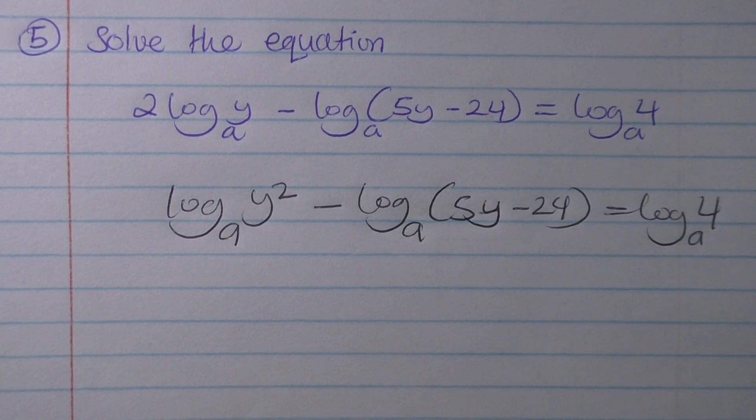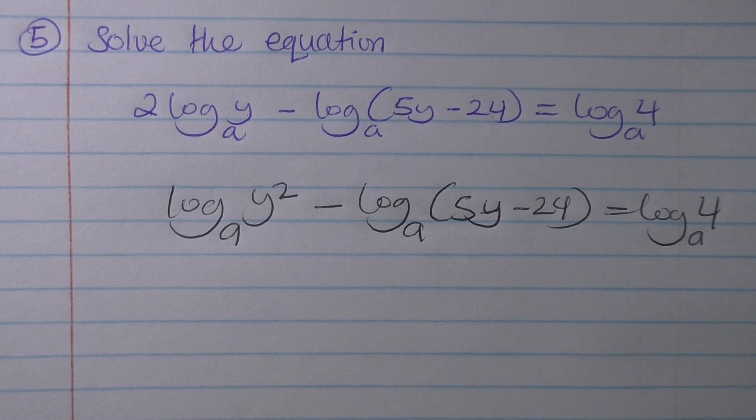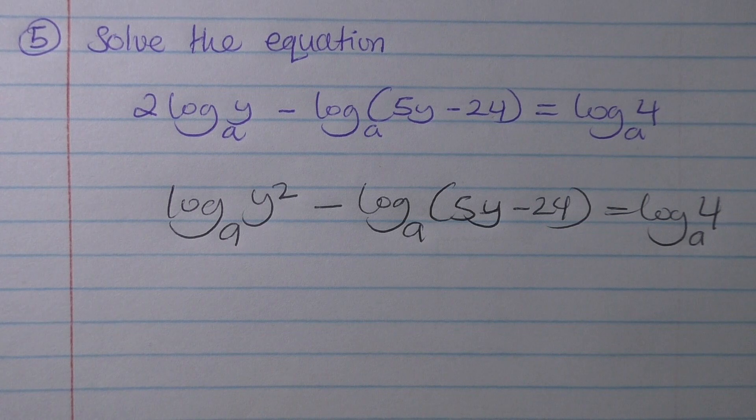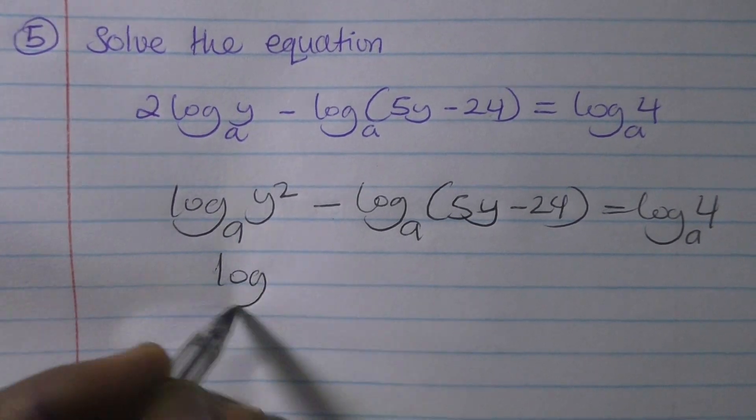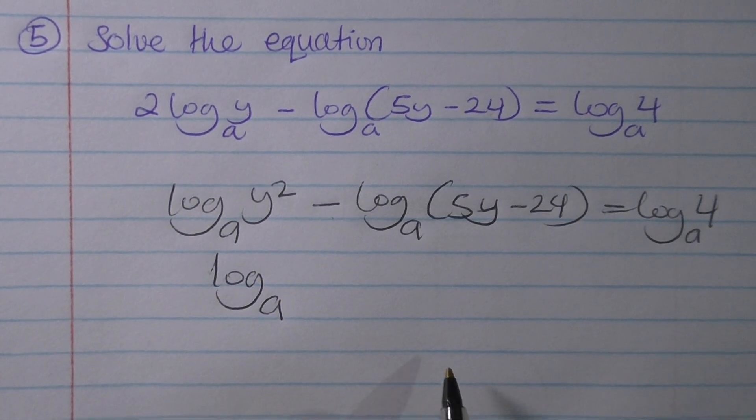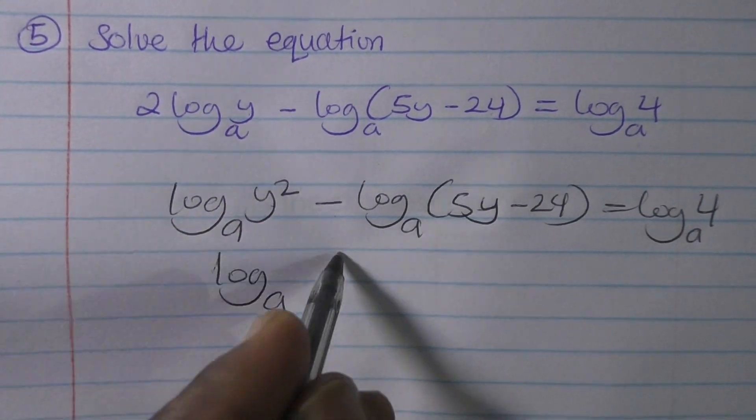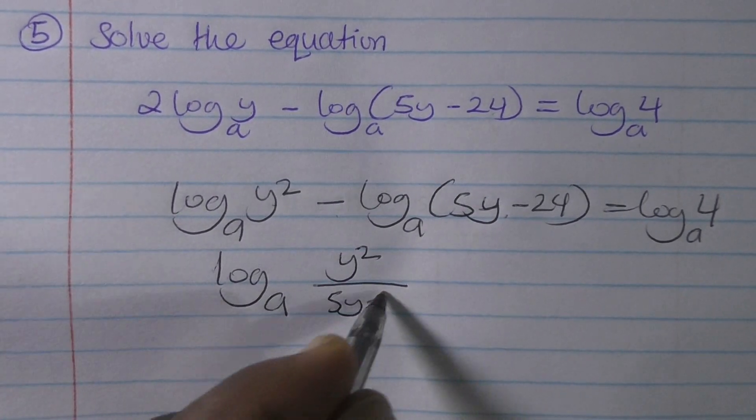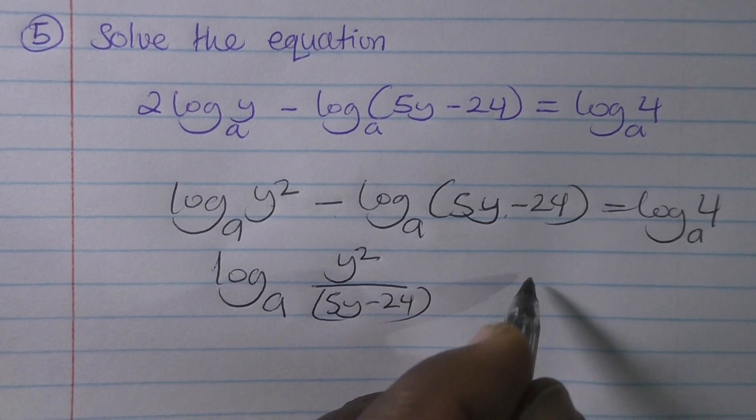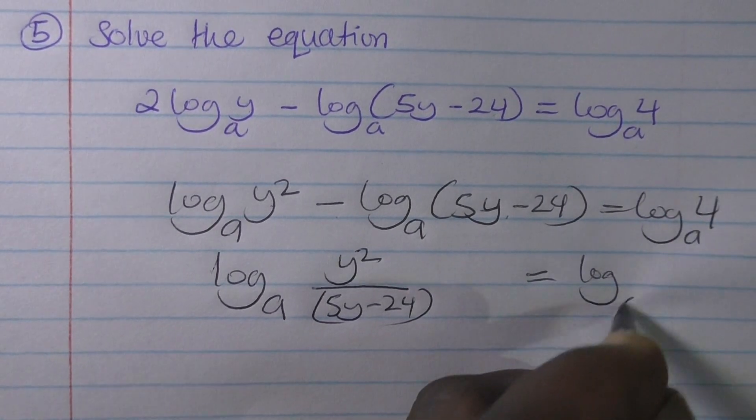After that, we are going to apply the rules. Since we have a minus, we shall bring up that. We see that when I'm subtracting, I divide the first power, which is y squared, over the next power, which is 5y minus 24. This giving us log base a of 4.